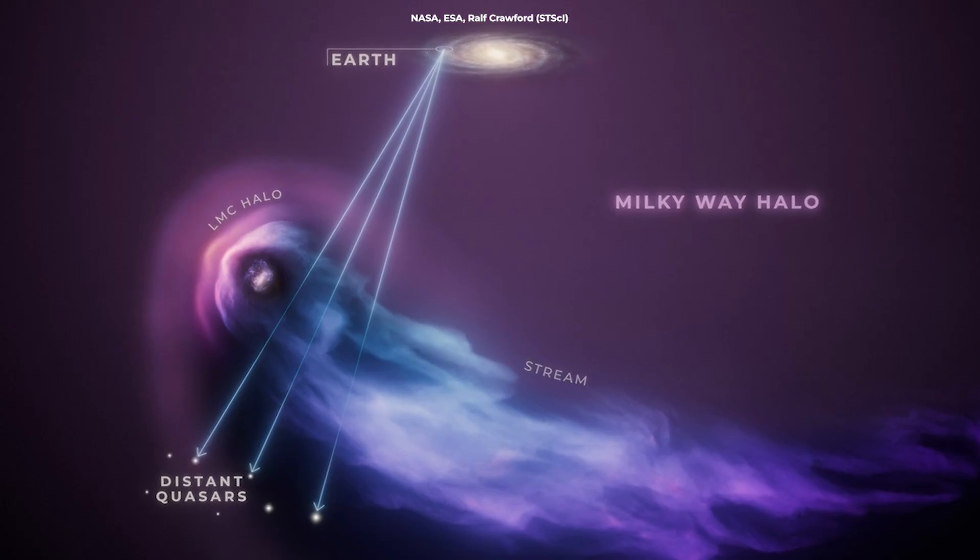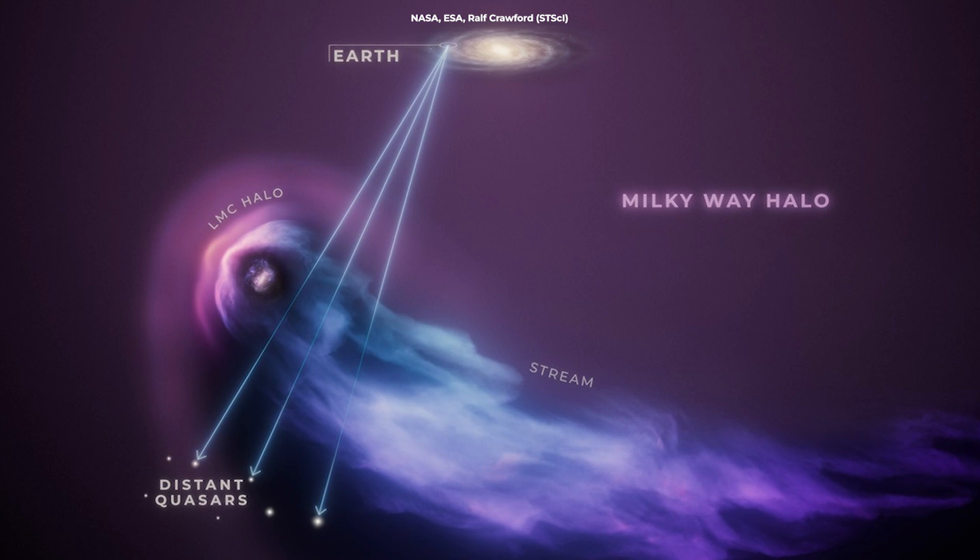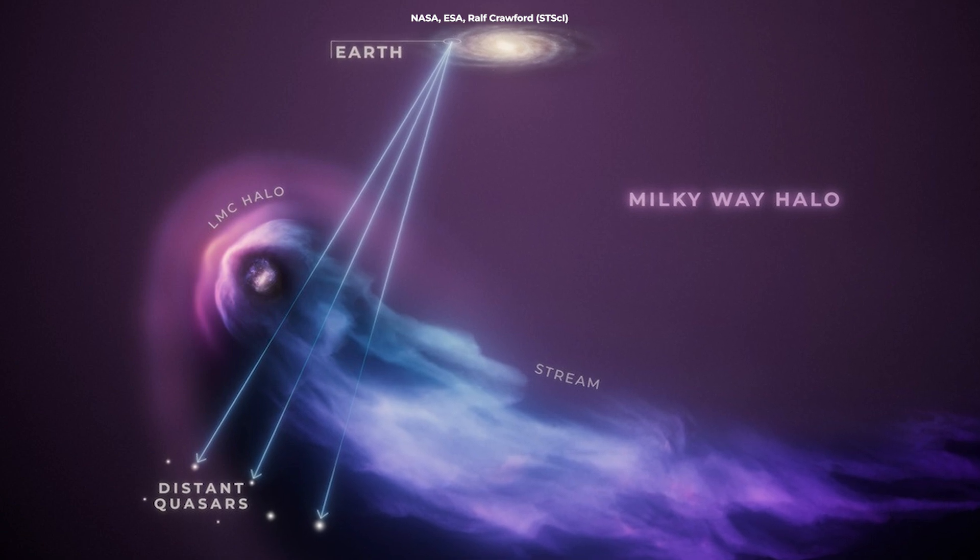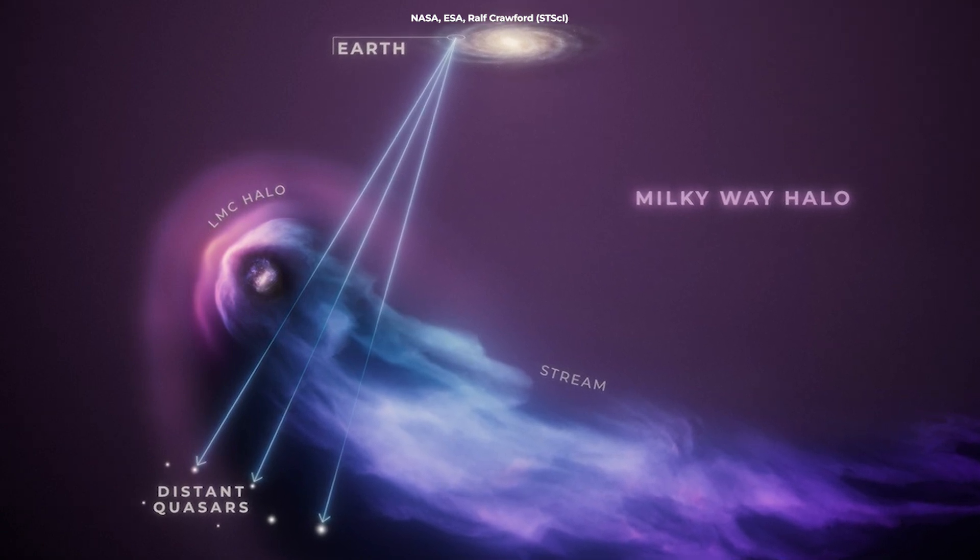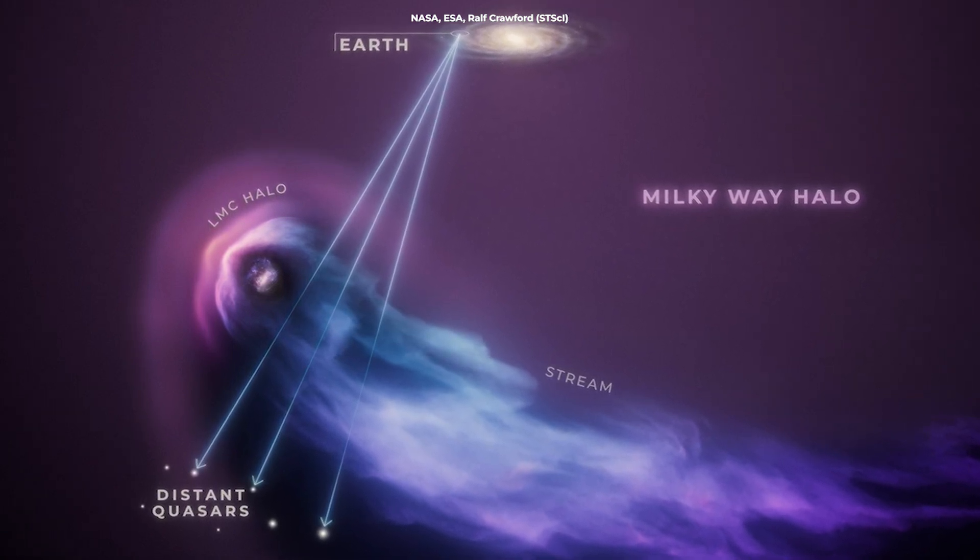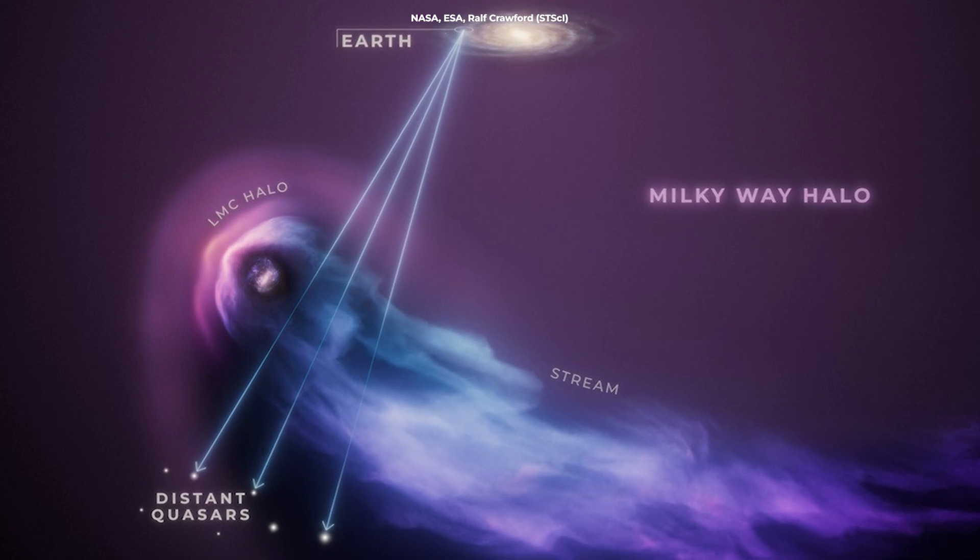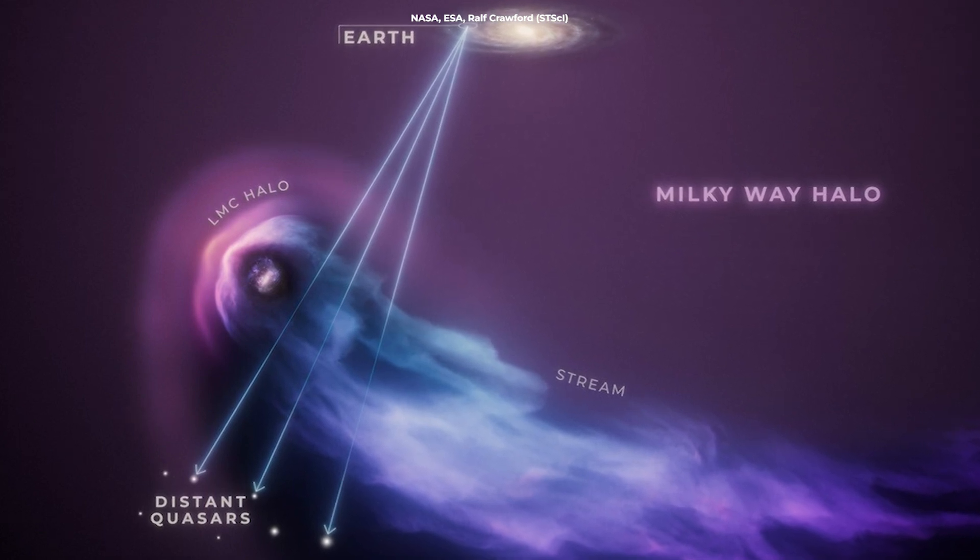The team used 28 quasars, think of them as cosmic spotlights, the brightest objects in the universe. As their light traveled through the Large Magellanic Cloud's halo, it picked up clues, like a cosmic fingerprint scanner.